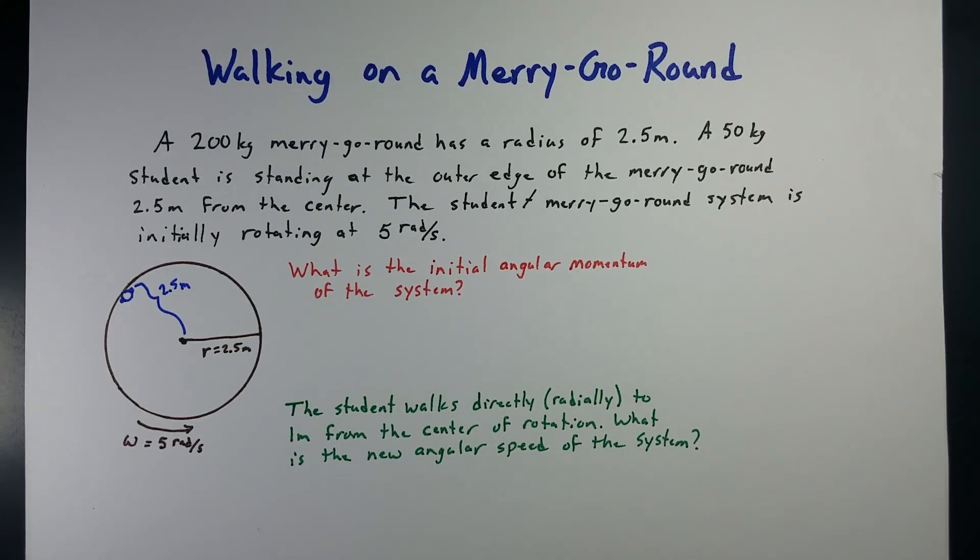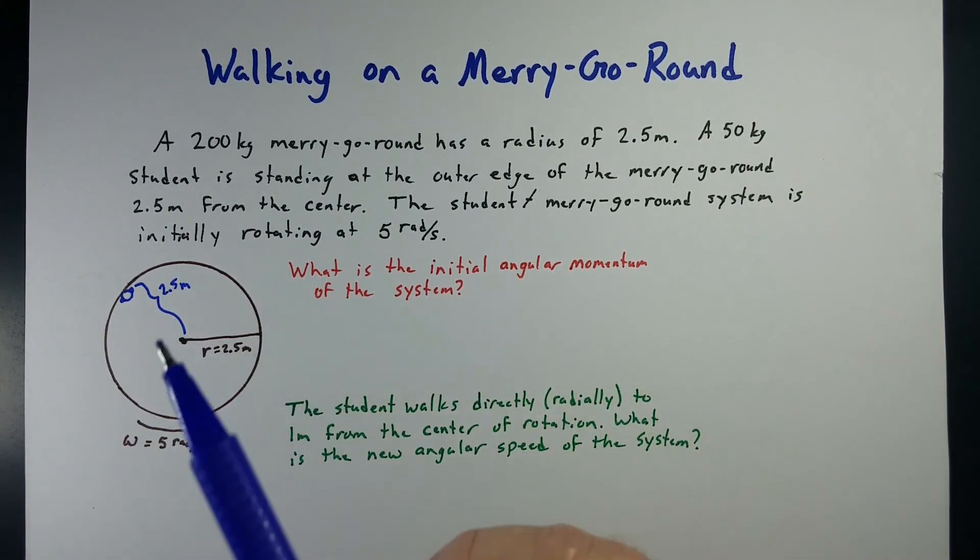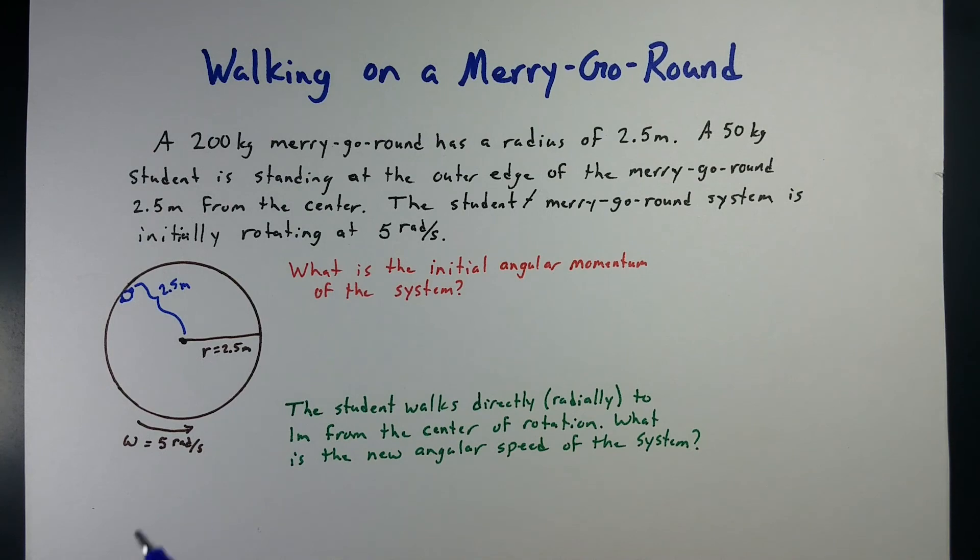Hi, this is Kenny Lee, and let's talk about the merry-go-round problem. That's one where we've got a merry-go-round spinning around, and we have somebody either walking in towards the center or out towards the edge, and see what happens to the angular momentum and the angular velocity of the merry-go-round system.